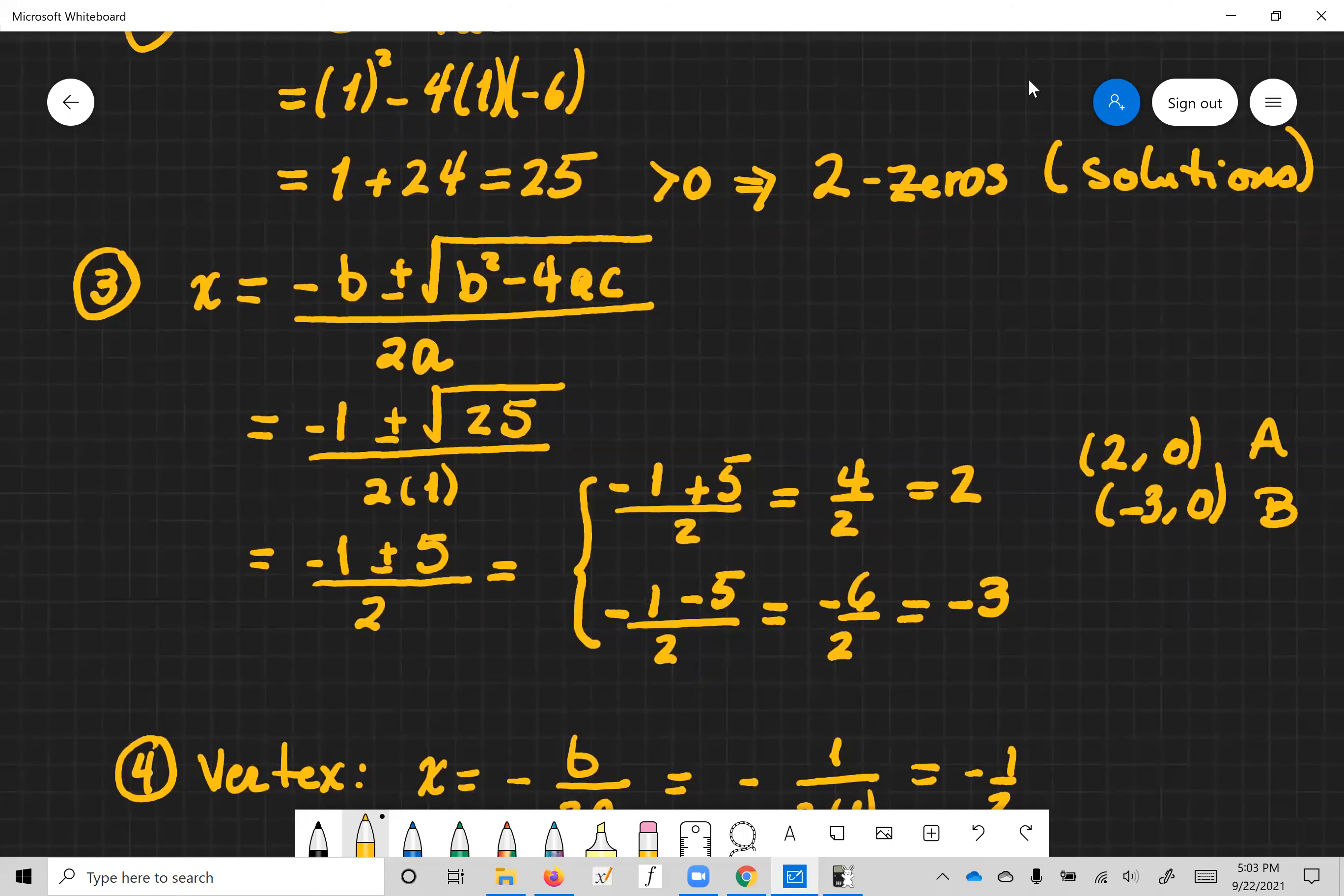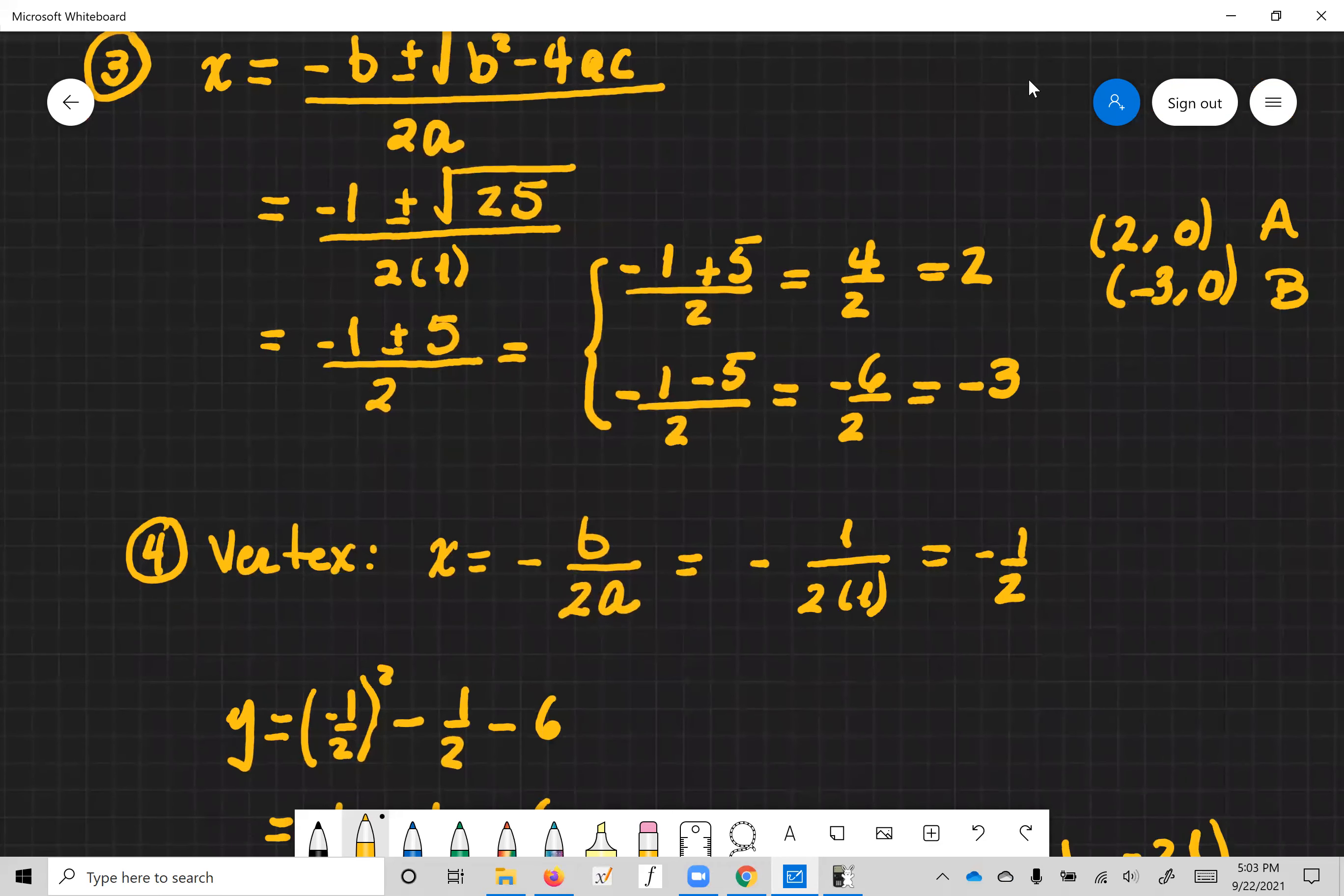Just so that we can put them on the graph so we know where they are. Now the vertex, by definition, the x coordinate is negative b over 2a, is negative one over two or negative a half.